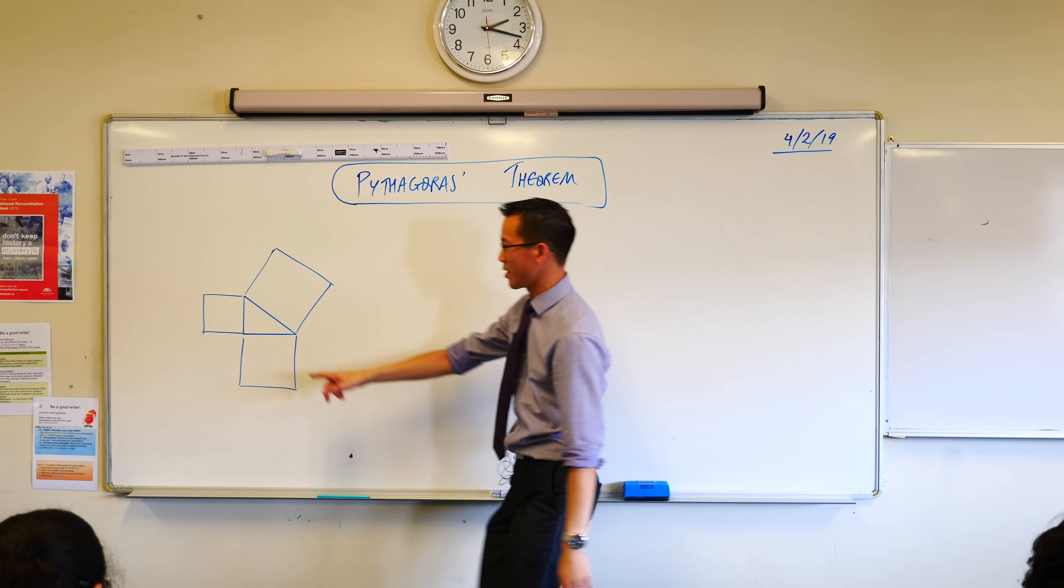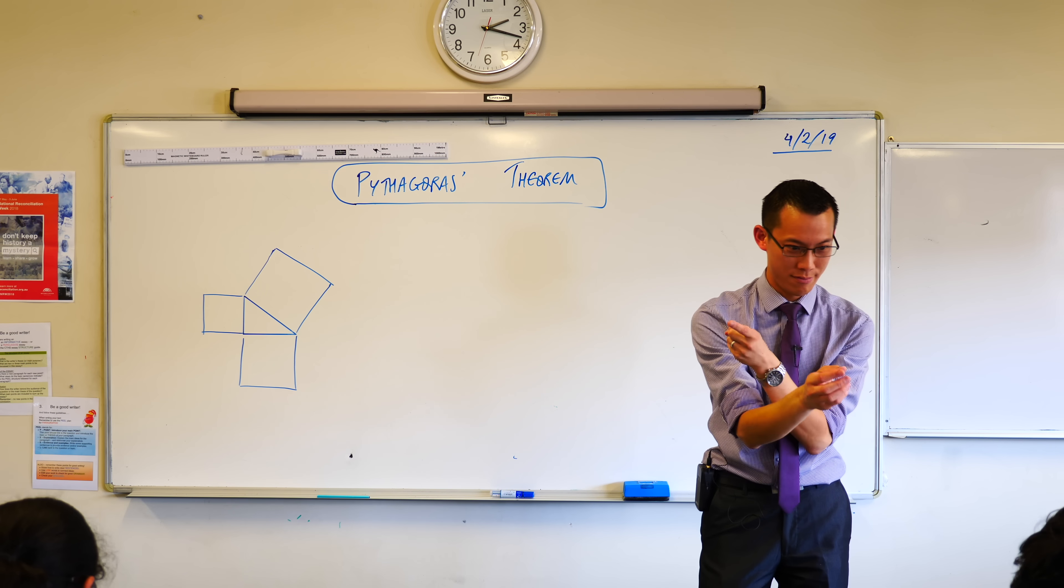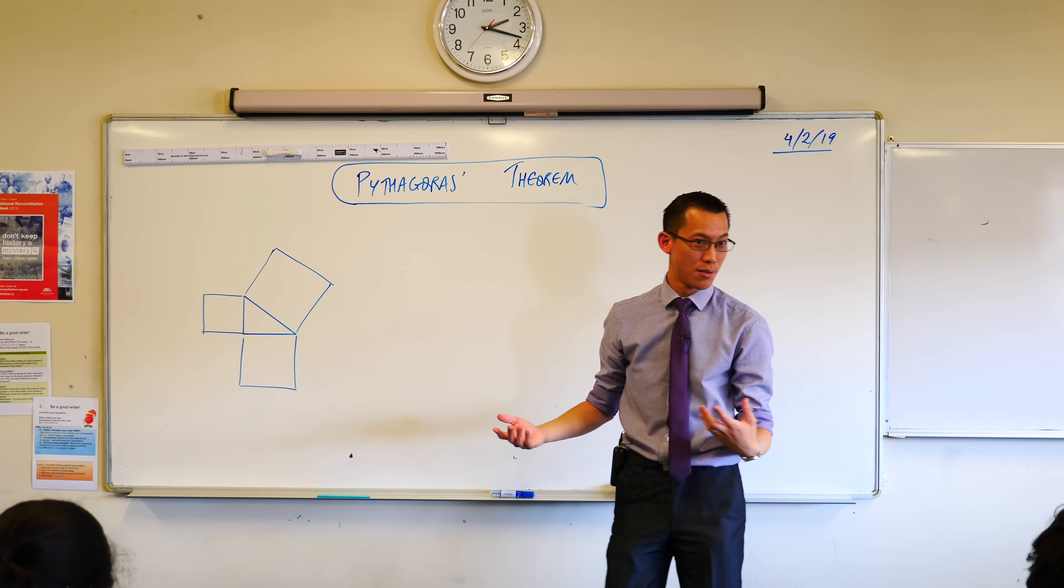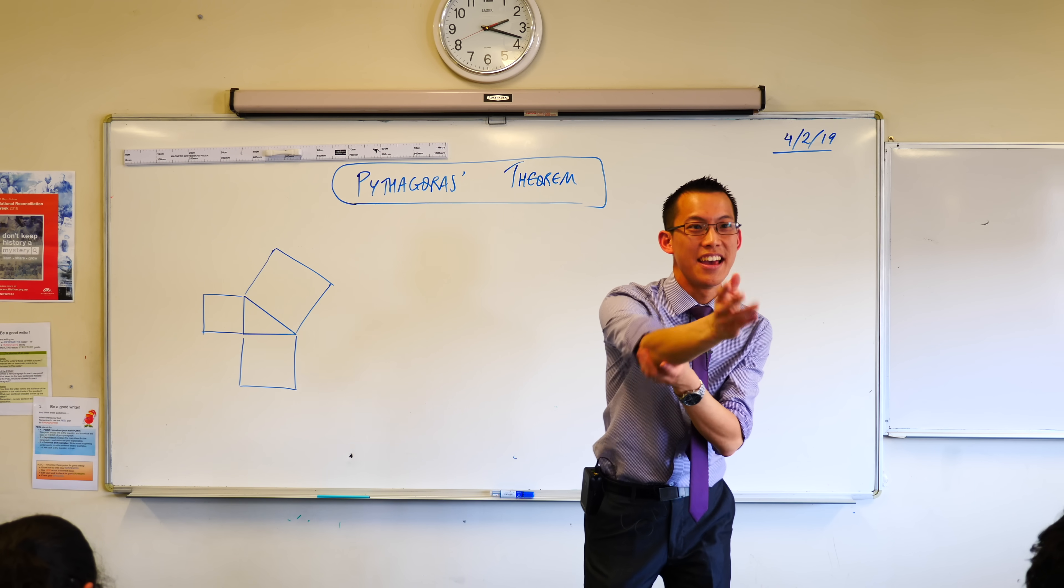What you've got here is a right-angled triangle. What makes it a triangle? It's got how many sides? Three. Very good. And what makes it right-angled? One of the angles is how big? How many degrees? 90 degrees. Very good.